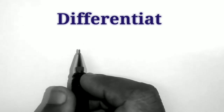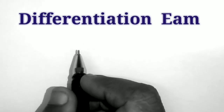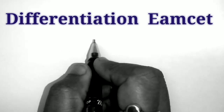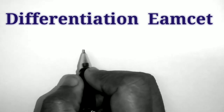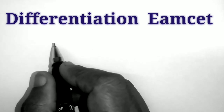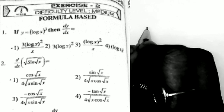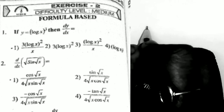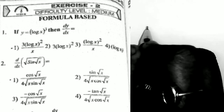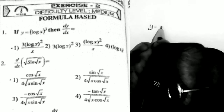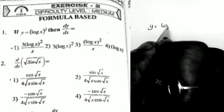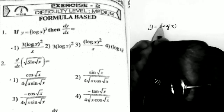In this video, I start the differentiation chapter. This is the XS2 difficult medium. The first question: if y is equal to (log x)³, then what is the value of dy/dx? Given that y is equal to (log x)³, this is the given question.